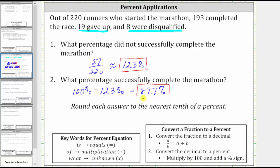Notice that if we add these two percentages, we get 100%. Again, that's because each runner either completed successfully or did not complete successfully. I hope you found this helpful.